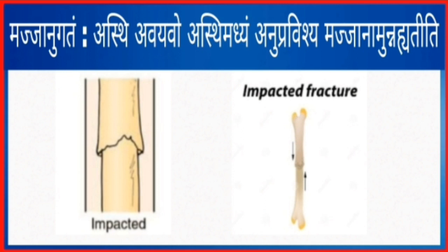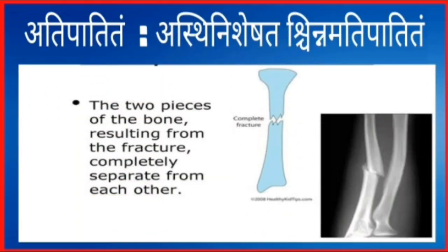Majjanugadam: asti avayavu asti madhyamanu pravishya majjana munnehya. That is, a part of the bone or the middle portion of the bone gets impacted into the bone marrow.